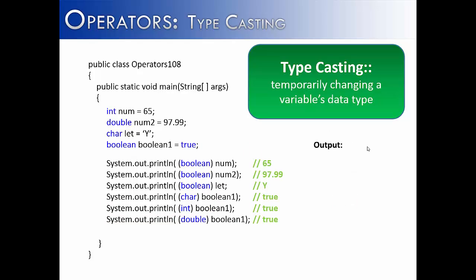In this next program, I've tried to show what happens when you try to take num, num2, and let and temporarily turn it into a boolean value. The last three lines take the boolean value and say, what happens when I turn it into a character, int, or double? Interestingly enough, absolutely nothing happens because it would cause an error. None of the primitive data types can be cast into a boolean, and a boolean cannot be cast into other simple data types. If you try to do this, the compiler would give you an error.